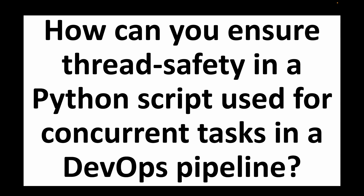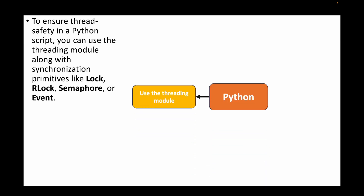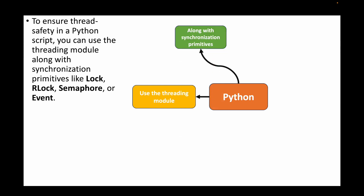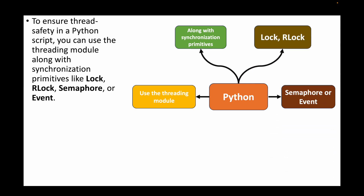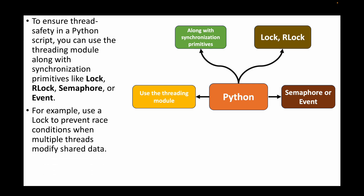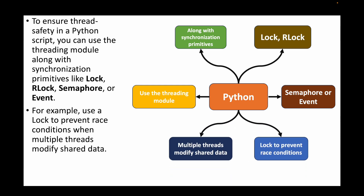The next question is: how can you ensure thread safety in a Python script used for concurrent tasks in a DevOps pipeline? To ensure thread safety we can make use of the threading module along with synchronization primitives like Lock, Semaphore, or Event. For example, we can use a Lock to prevent race conditions when multiple threads are trying to modify shared data, so that if one thread is working with the data, other threads will not be able to access it.